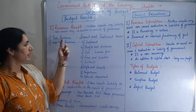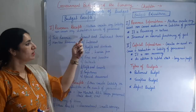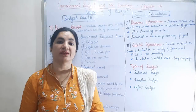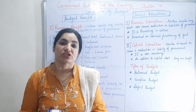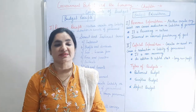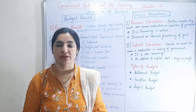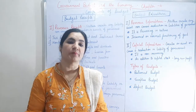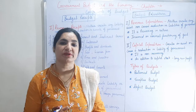Revenue receipts can be tax revenues and non-tax revenues. Tax revenue can be categorized under direct taxes and indirect taxes. Direct taxes are imposed on the property and income of individuals or organizations such as companies. The actual burden of paying direct tax is on the same person on whom the tax is imposed by the government. This tax cannot be avoided; otherwise the person is penalized.